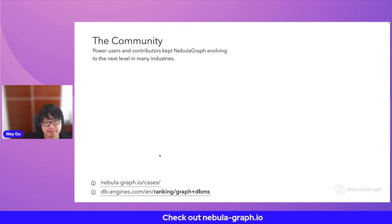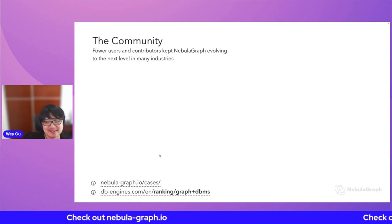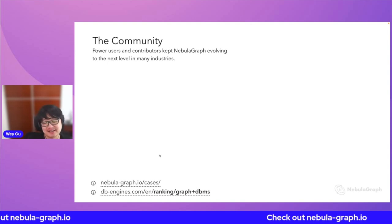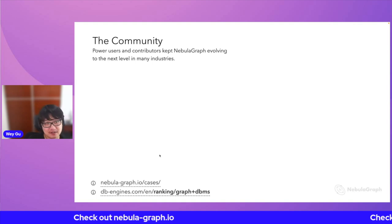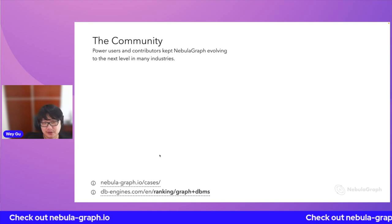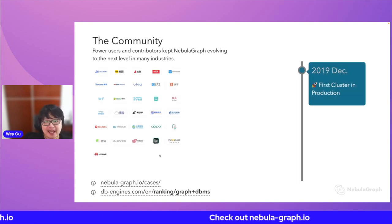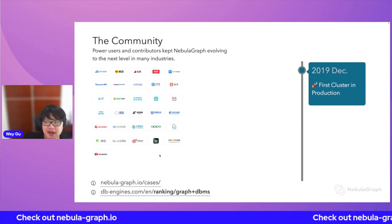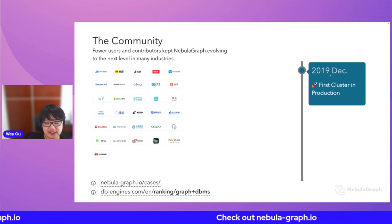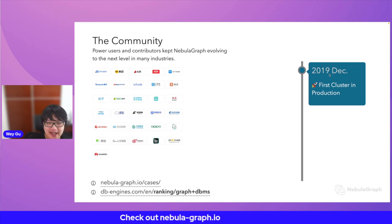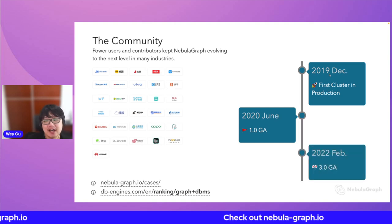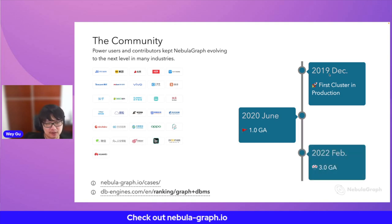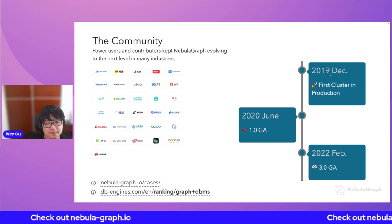Another reason: we are open source, Apache 2.0 licensed — not just source available. We have a relatively active community. Since we started the project in 2018, we had our very first production users at the end of 2019. Now we have the 3.0 GA from the beginning of this year, and we have around a thousand users on record that we track.